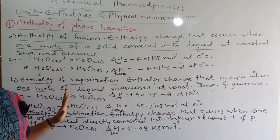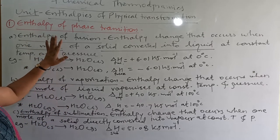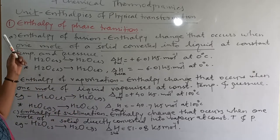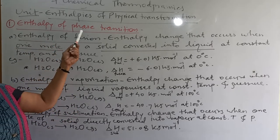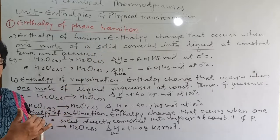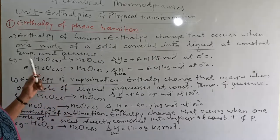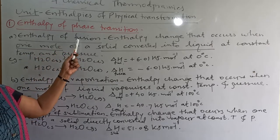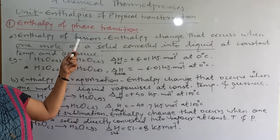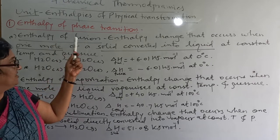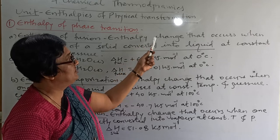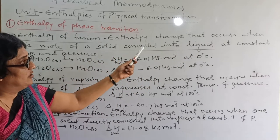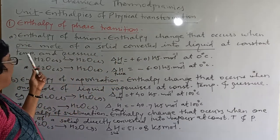The definitions are very simple. If you know the meaning of the term — like fusion, vaporization, sublimation, etc. — the first category is enthalpy of phase transition. Phase transition means conversion of one phase to another. The first definition: enthalpy of fusion means the enthalpy change that occurs when one mole of a solid is converted into liquid at constant temperature and pressure.